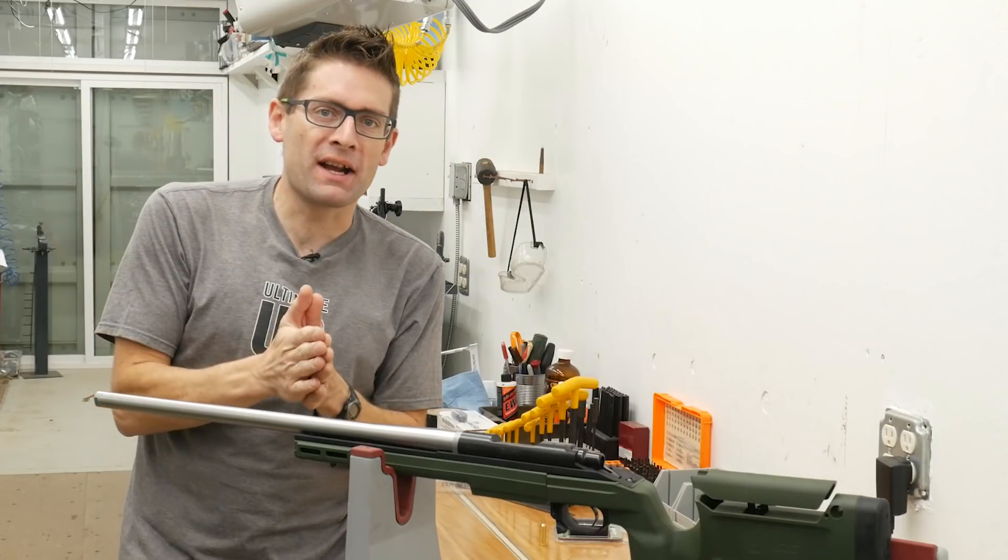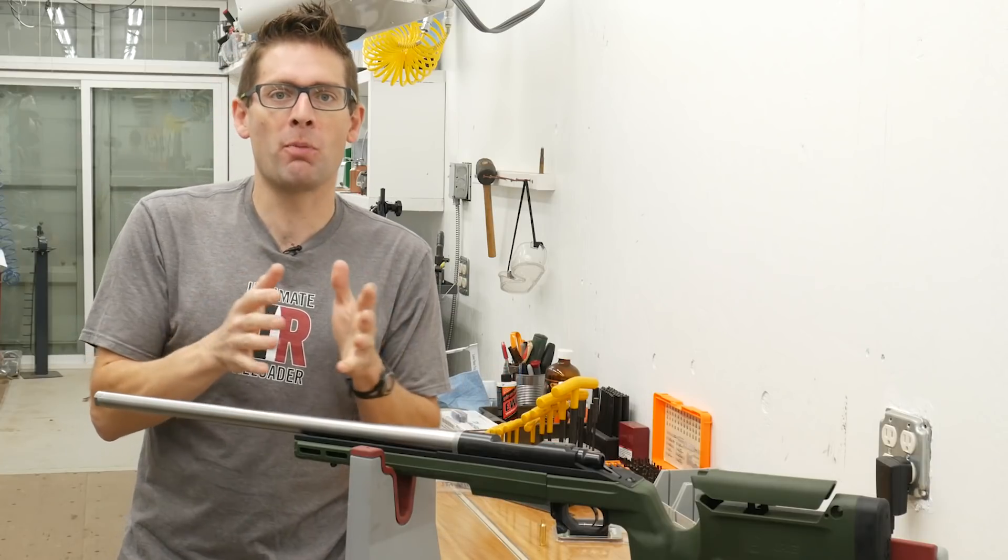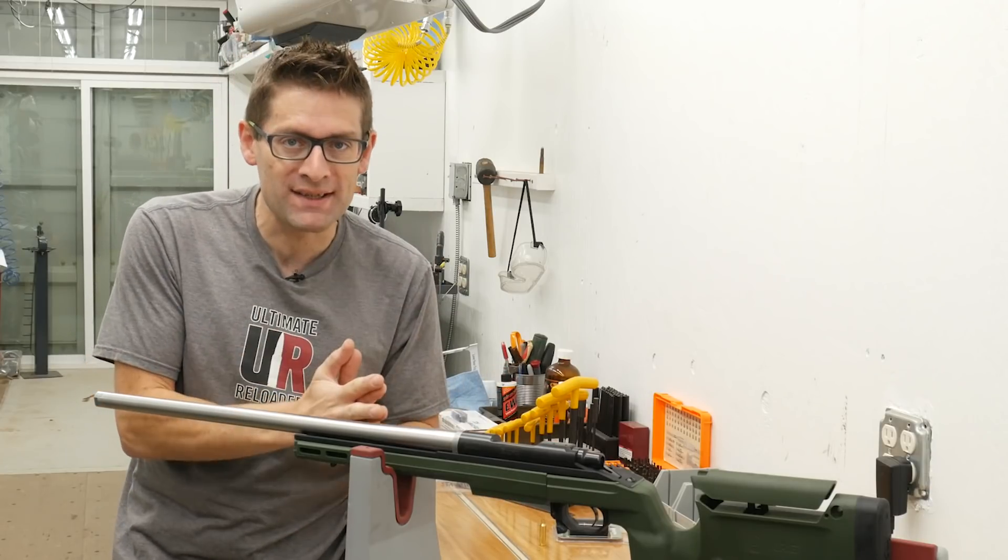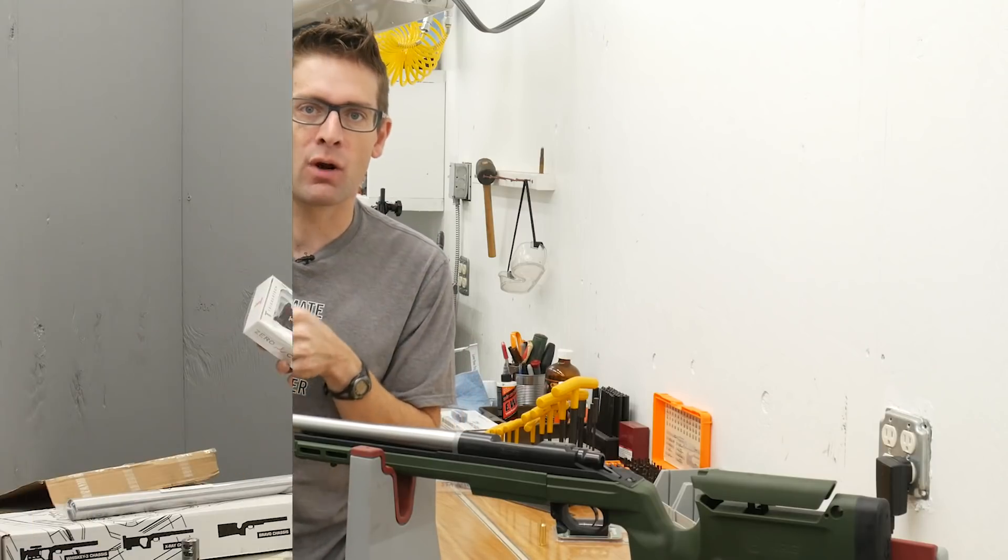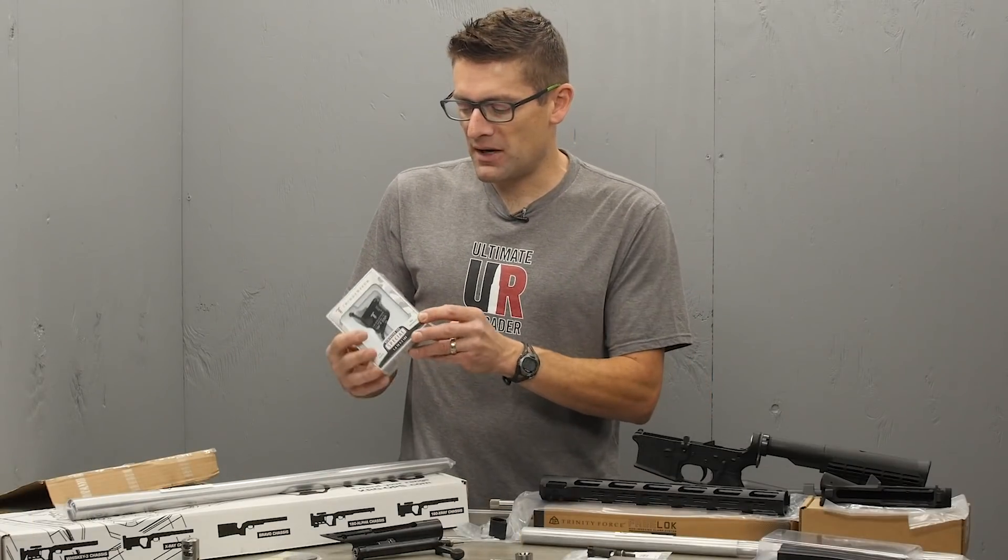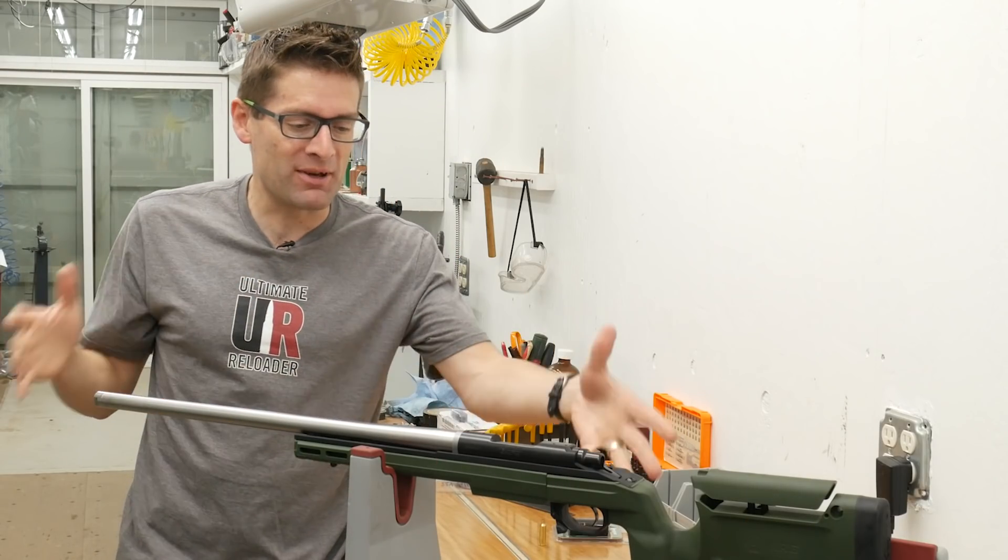Gavin Gu here from makingwithmetal.com and ultimatereloader.com. I just finished the core part, my 224 Valkyrie Remington 700 bolt-action rifle build. You're going to want to check out the last video where I walk through all the details for the components I'm going to use for both the AR-15 build and this Remington 700 build.